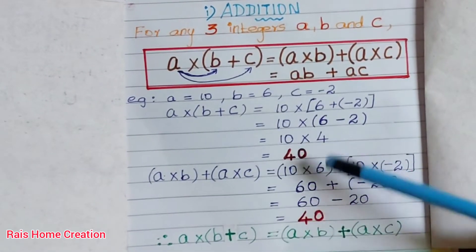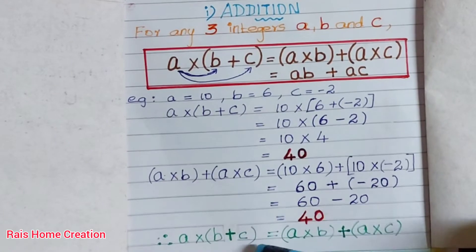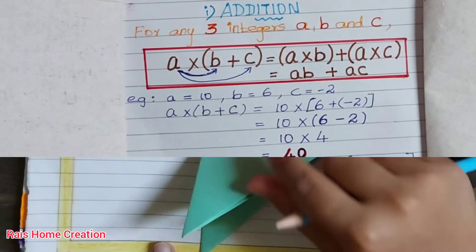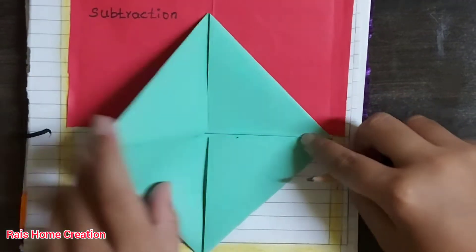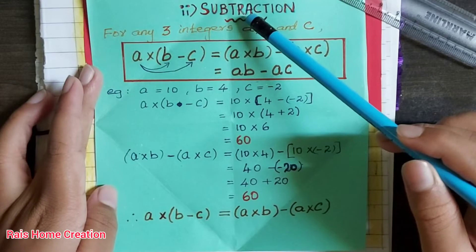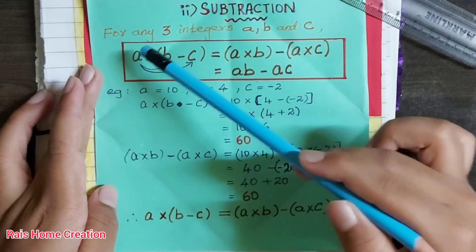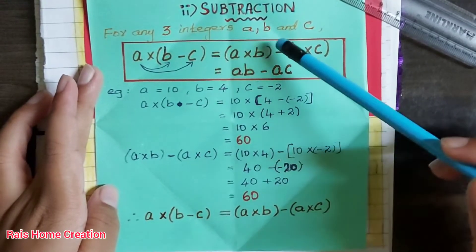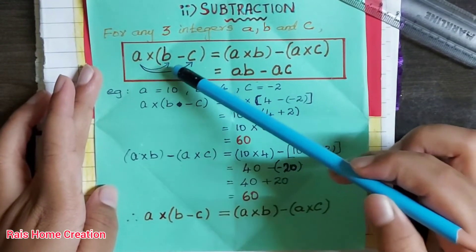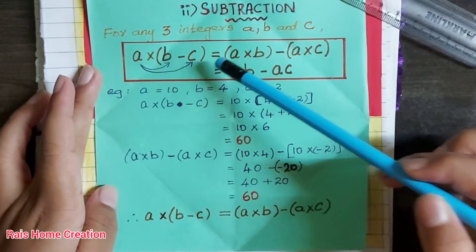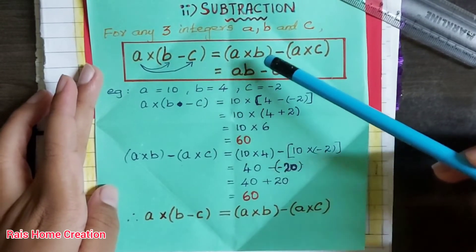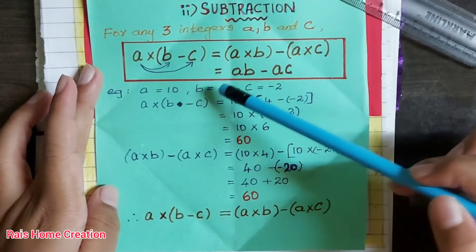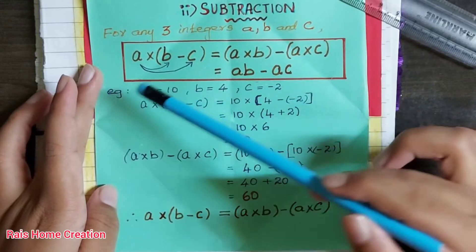Both the answers are the same, hence the property is verified. For subtraction, for any three integers a, b and c: a into (b minus c) equals a into b minus a into c, which equals ab minus ac.